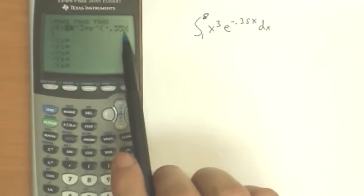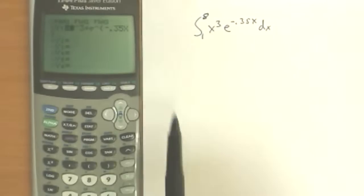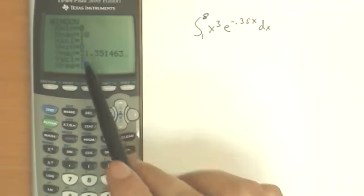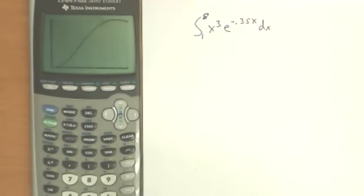x cubed times e to the negative 0.35x. So I have the same thing in the calculator here. And I've chosen a window from 0 to 10. I actually let the calculator choose the max and min. So that's what it looks like on a graph.